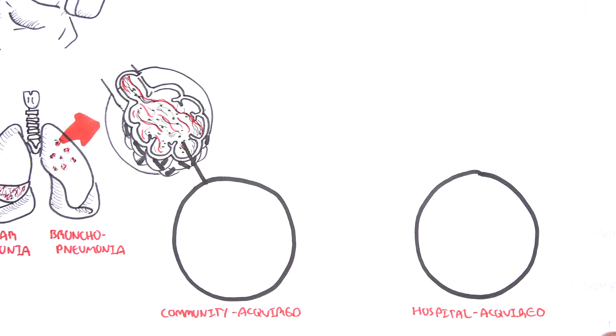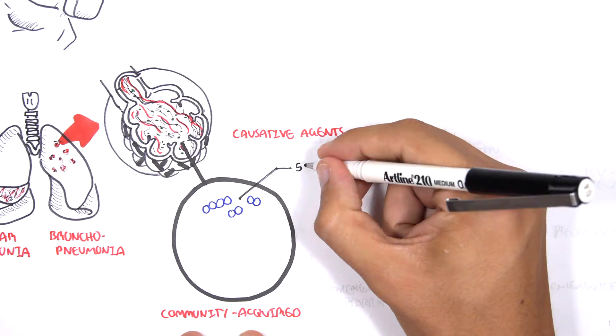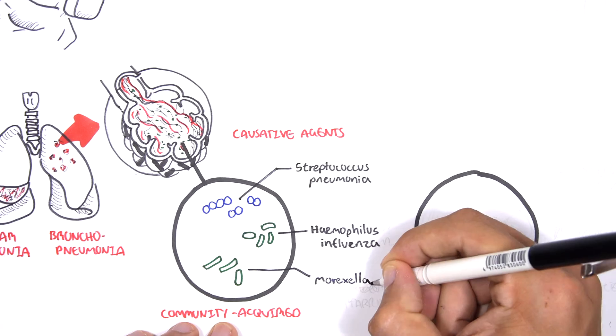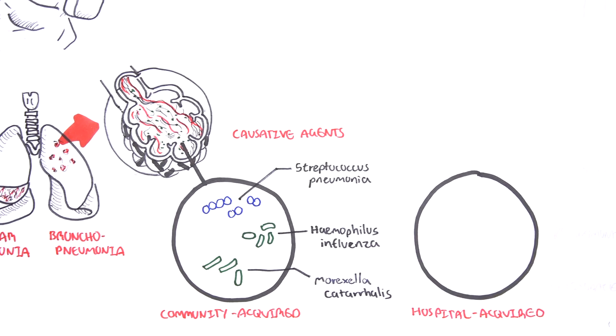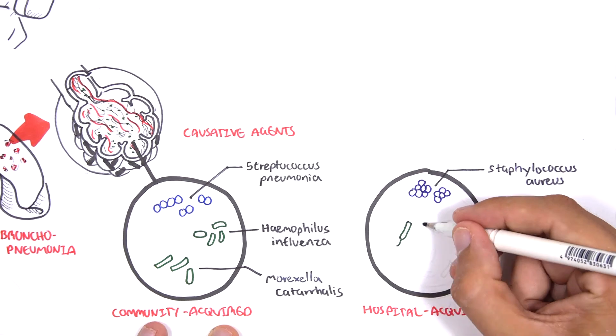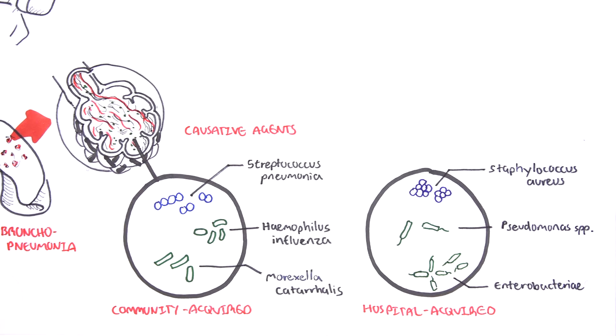For example, in community acquired pneumonia, common causative agents include Streptococcus pneumoniae, Haemophilus influenzae and Moraxella catarrhalis. Whereas in hospital acquired pneumonia, it is often Staphylococcus aureus, Pseudomonas species and other enterobacteriae.